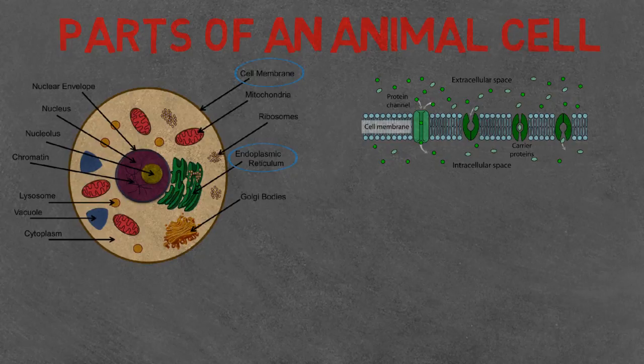Endoplasmic reticulum. There's two types, smooth and rough. Rough is ribosomes that attach to the outside making it appear rough. The main function is to modify and package vesicles for transport to the Golgi body.